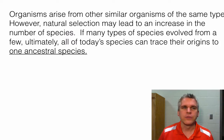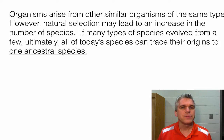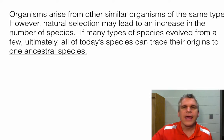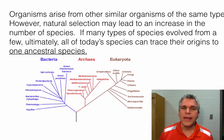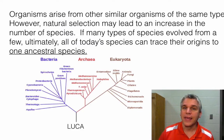We've been talking about in this process of evolution that organisms can arise from other similar organisms of the same type. However, natural selection may lead to an increase in the number of species. If many species evolve from just a few, and we continue working our way back in time, ultimately all of today's species can then trace their origins back to just one ancestral species. We might have a cladogram that looks something like this, including the three major domains of all living things today. That one ancestral species we call LUCA, or the Last Universal Common Ancestor.